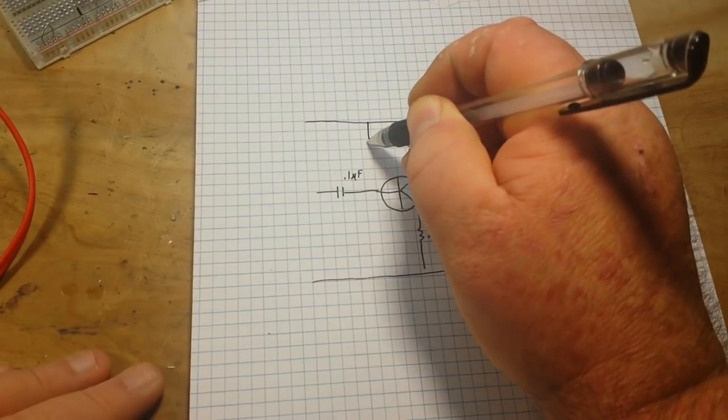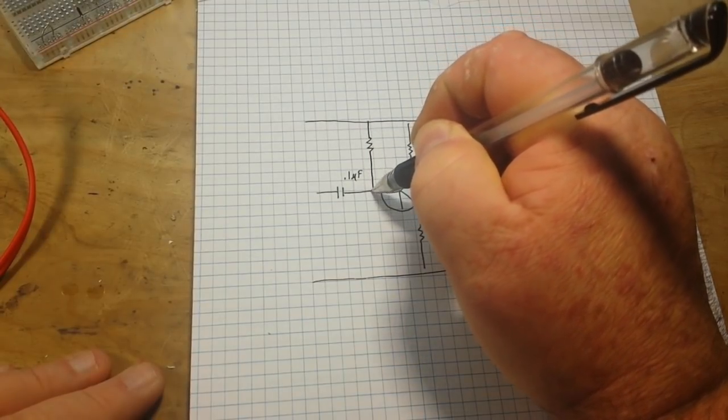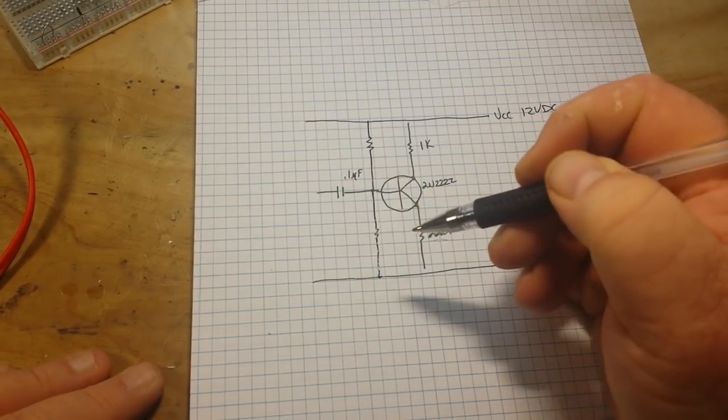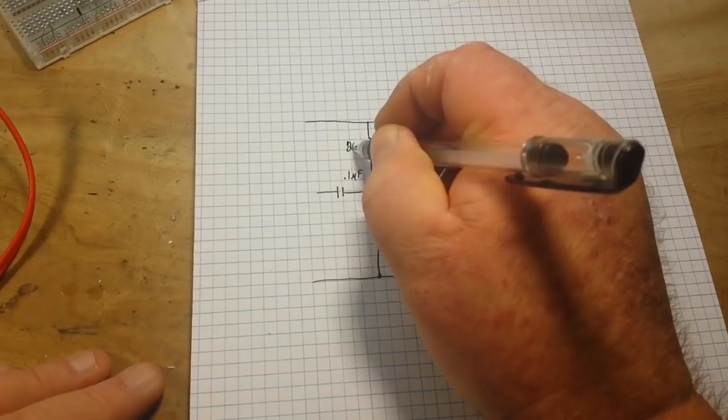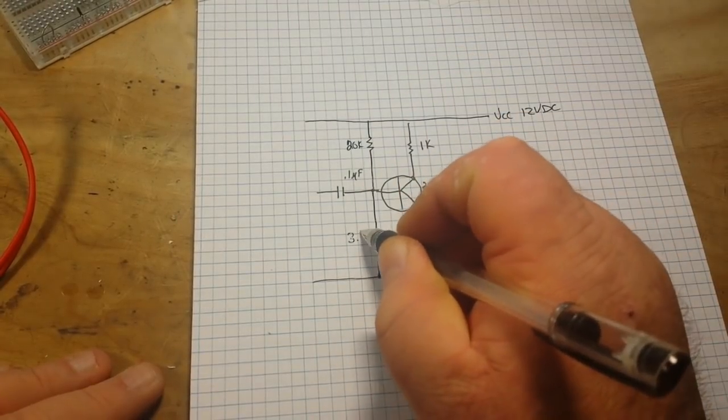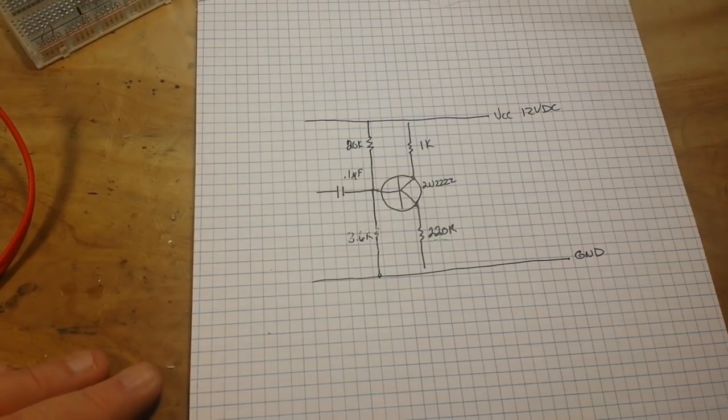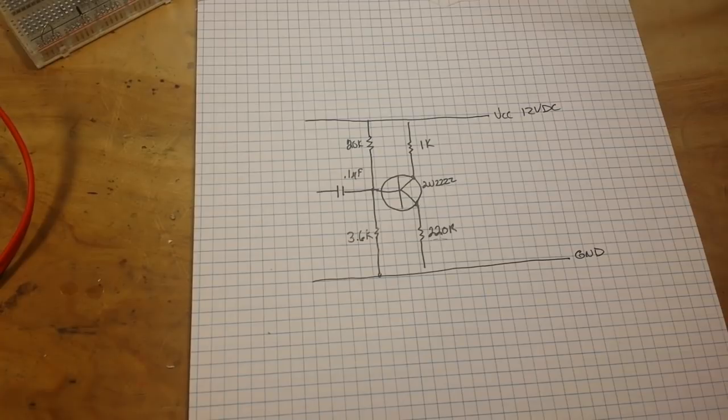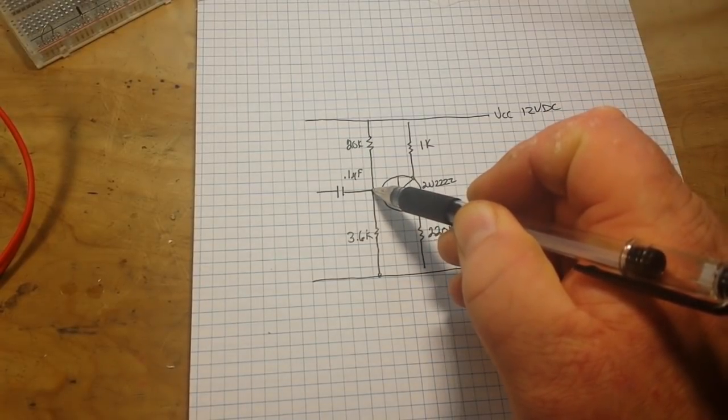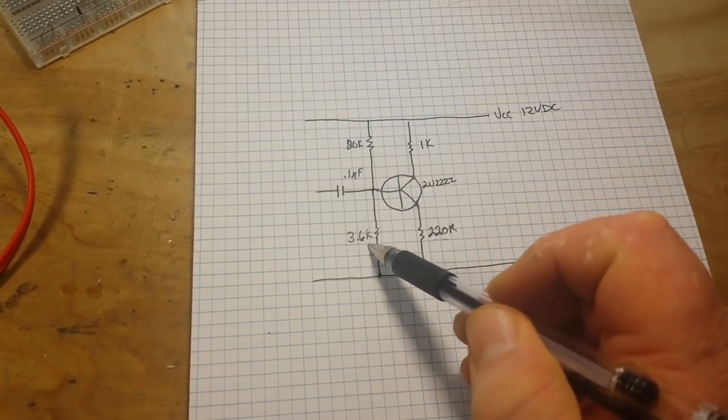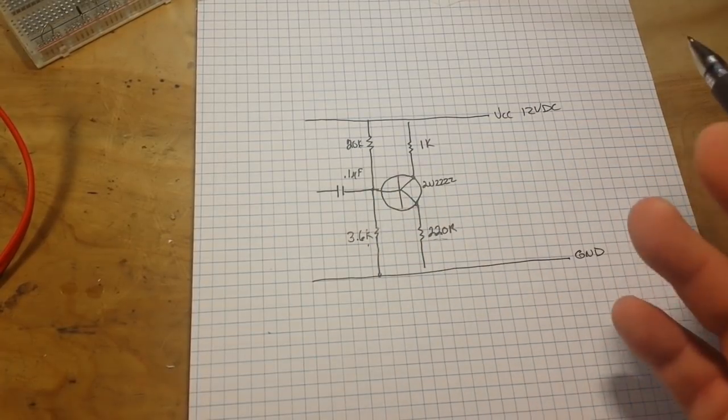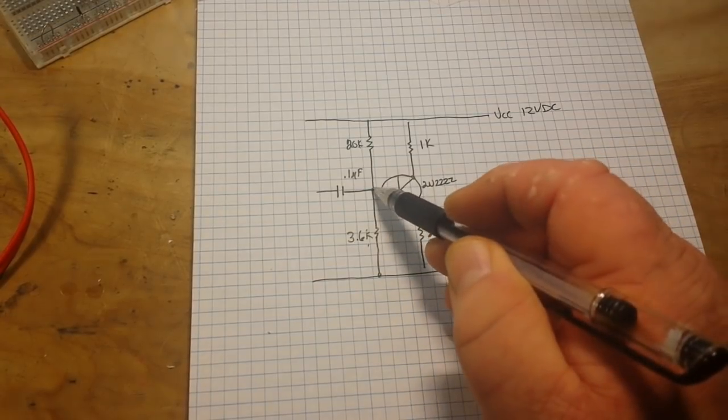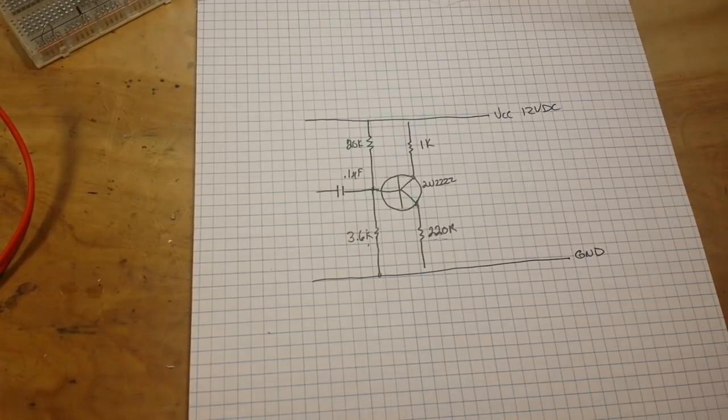Now the next thing that we have to do is bias the base of the transistor with a voltage divider. We're going to use 20k and 3.6k. I'm sure you remember your voltage divider calculations, but Vout, so the voltage at this point here is R2 over R1 plus R2. Since we're doing 12 volts in this case, we're going to get about 1.8 volts here, and that is going to give us a nice bias point for our transistor.